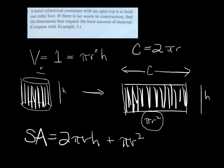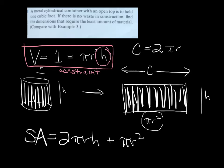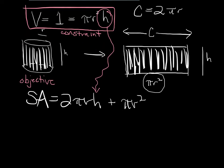How are we going to use the volume constraint equation? We'll solve it for h, then plug our formula for h into our objective, the surface area. Our objective is to minimize surface area, constrained by volume equals 1.